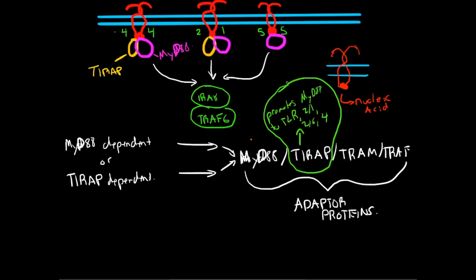TRAM promotes TRIF. So TRAM here promotes TRIF. This is TRIF. I'll do this in a different color. TRIF recruitment to endosomal TLR3 and TLR4. So here's your endosomal one. So I'll put 3 and 4. TRAM recruits TRIF to 3 and 4.